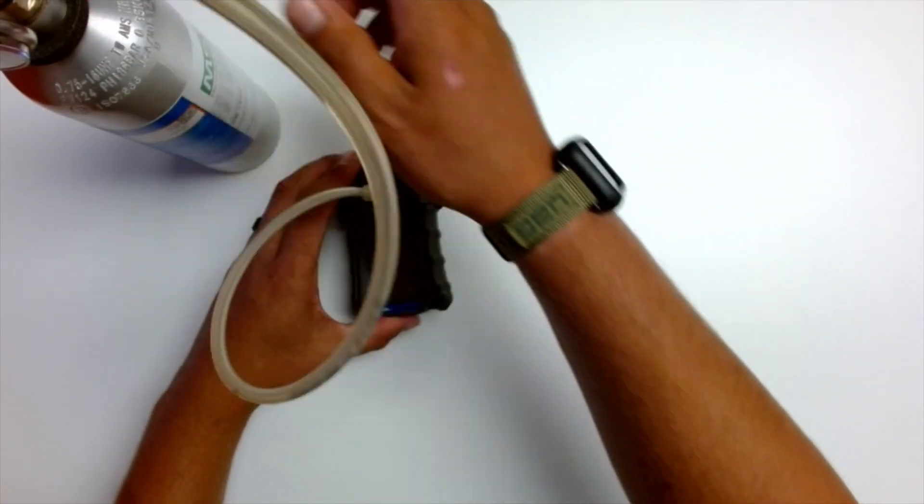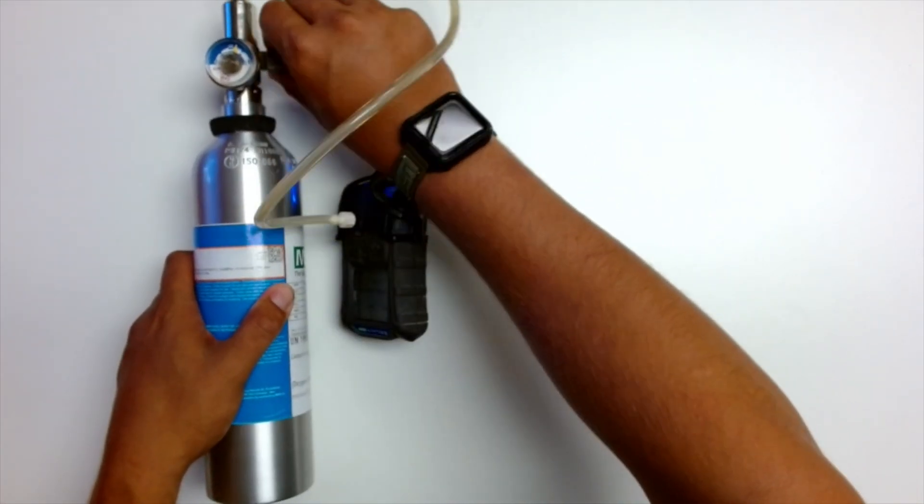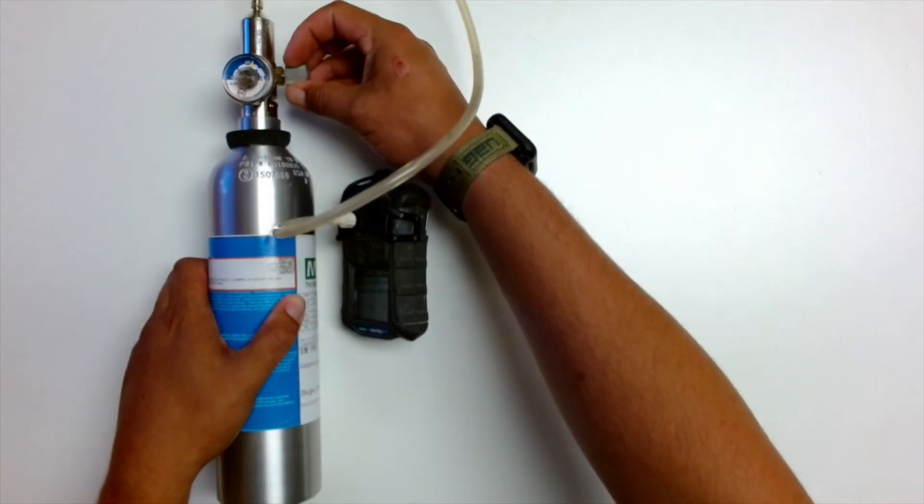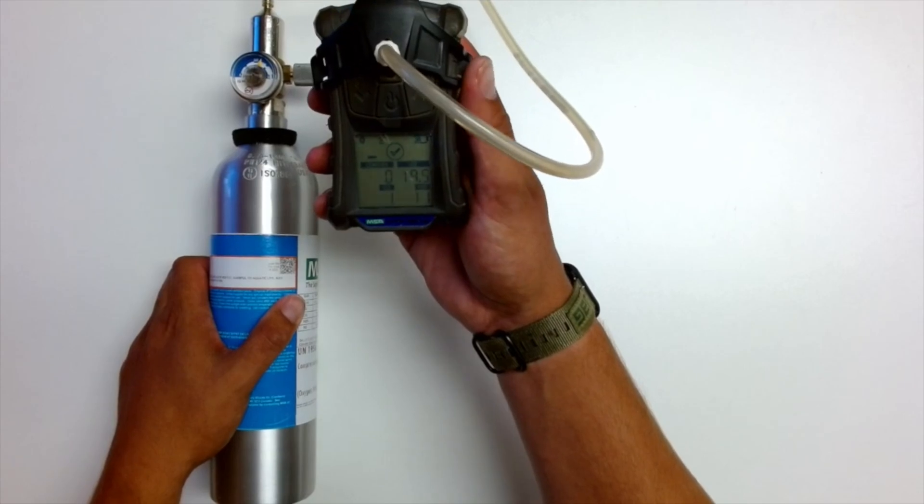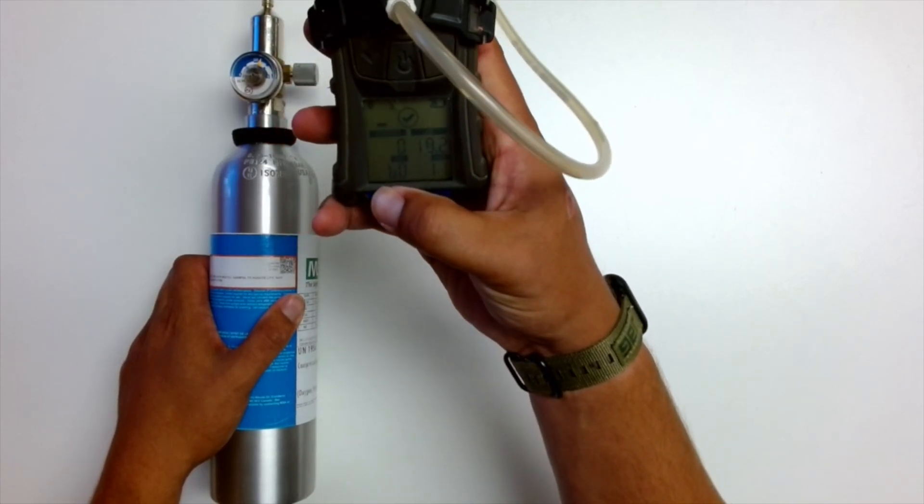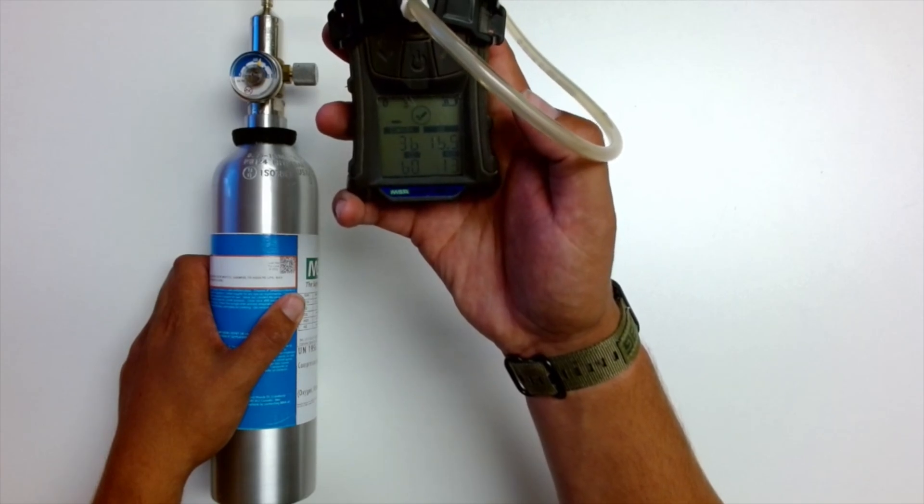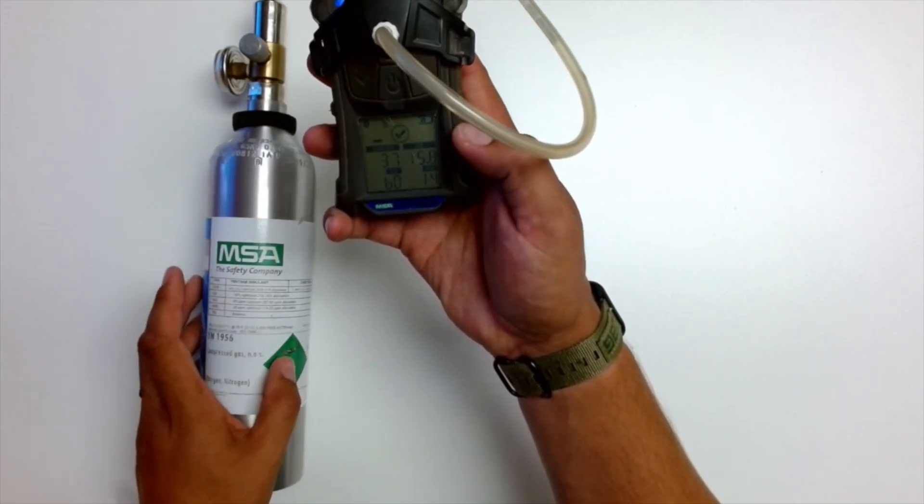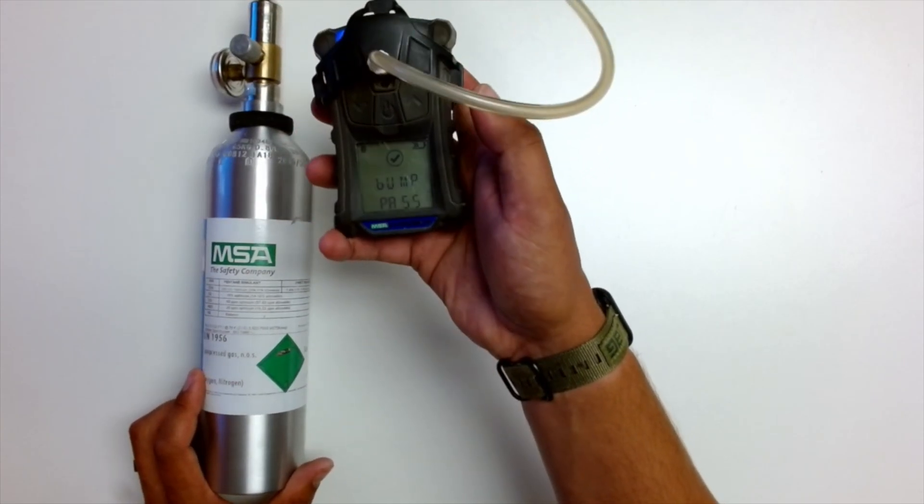The monitor here is flashing saying we're ready for gas. So I'm going to turn my calibration cylinder on, and then gas will be applied to the monitor. And you'll see the values will change throughout your bump test, basically showing how much concentration of the gas is hitting the sensors inside the monitor. We should soon get a pass.